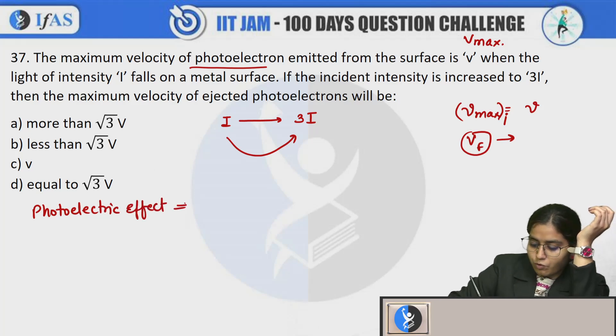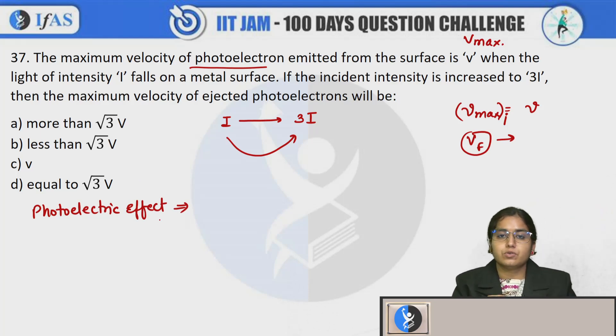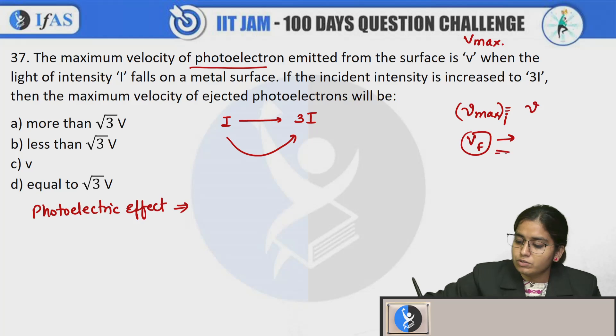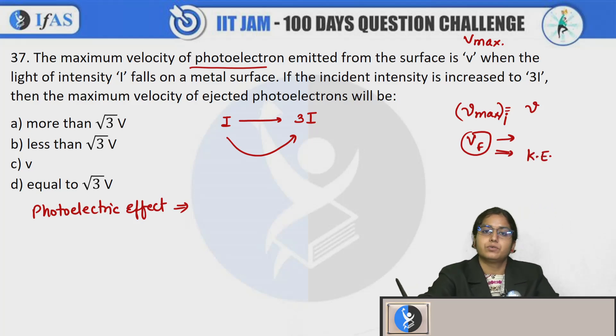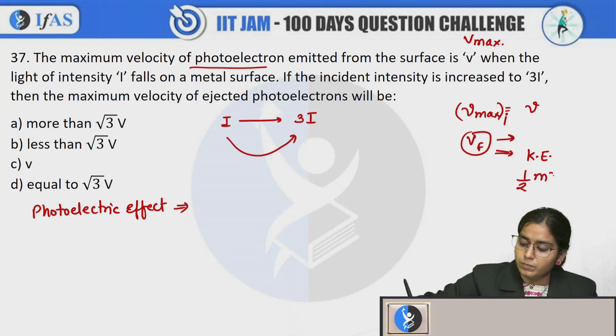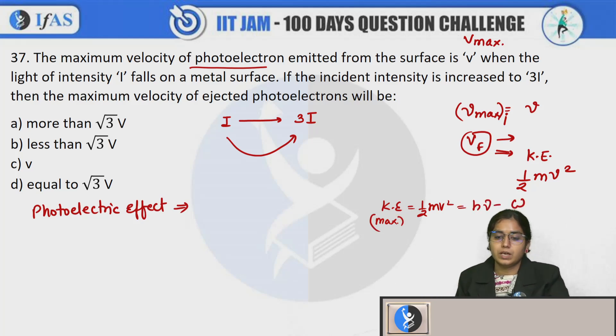So you should know that in the photoelectric effect, what happens in the kinetic energy which is half mv square - we write kinetic energy or half mv square maximum value, it is nothing but h nu minus work function.